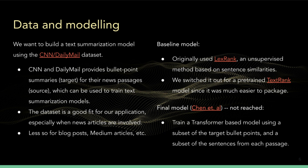On the other hand, it is not such a good dataset for summarizing blog posts or online articles on specialized subjects. We started by training a LexRank model on roughly 100 news passages as our baseline. This is an unsupervised method that finds the most important sentences in a passage based on sentence similarities. However, we eventually switched it out for a pre-trained TexRank model, since it was much easier to package. Although we never managed to train our final model, we were going to follow the route used by Chen et al., who trained a transformer-based model on a subset of sentences combined with one or two top recommendations from a LexRank or TexRank model to reduce training time.